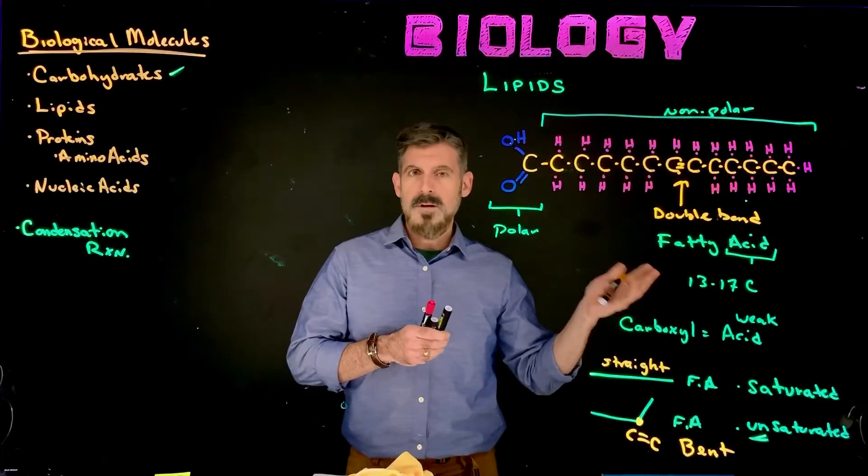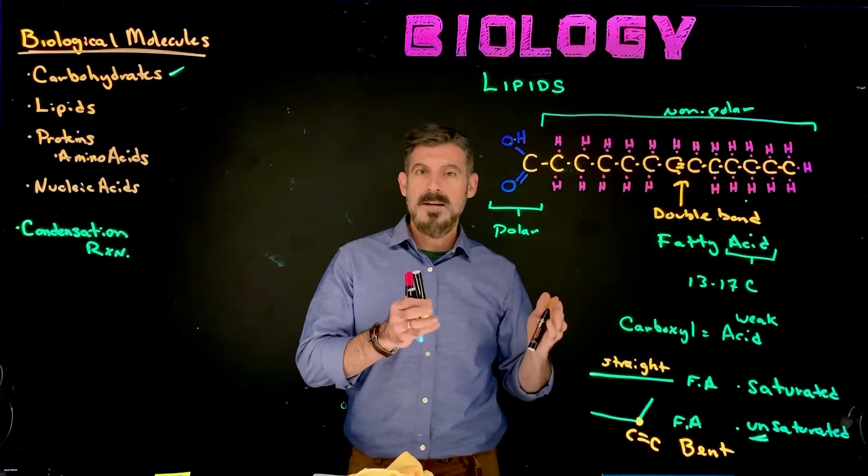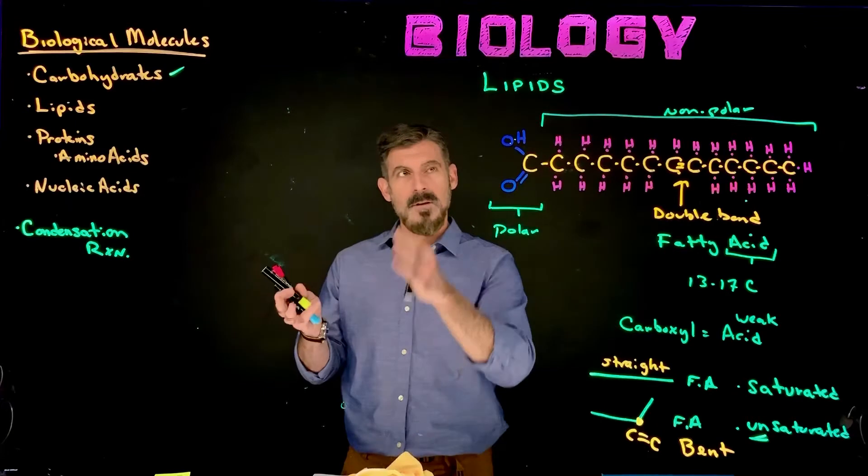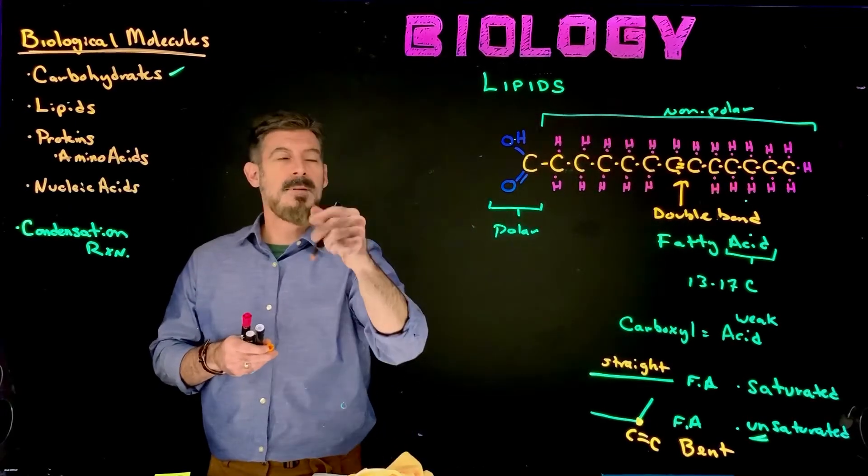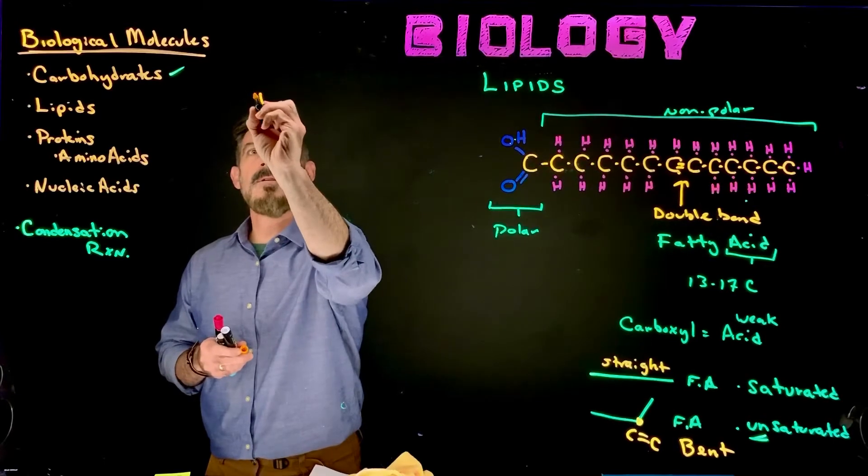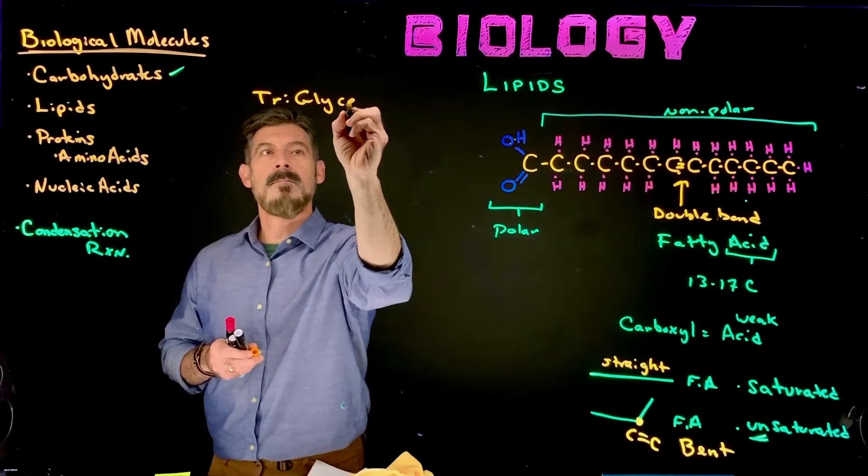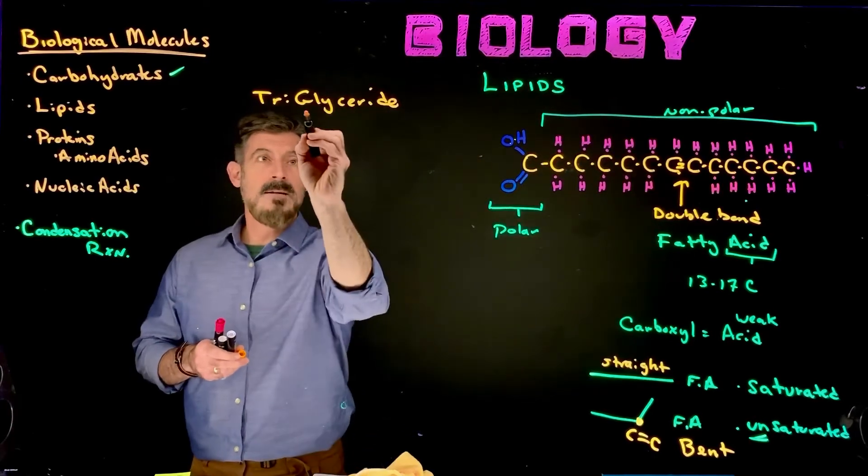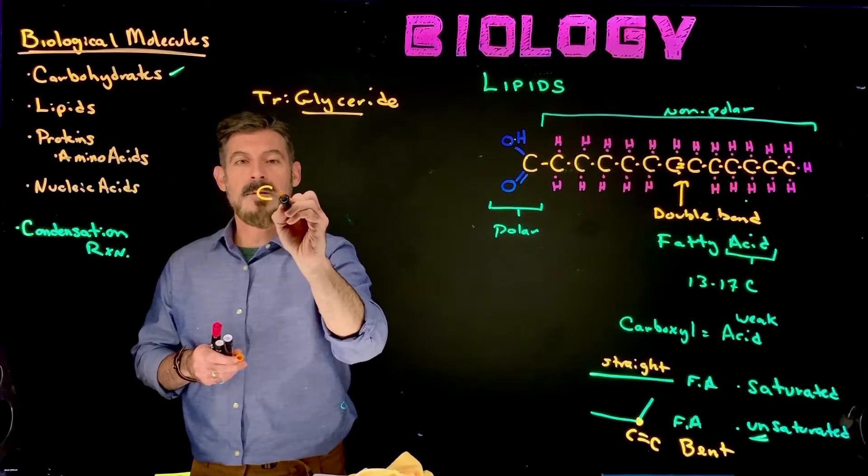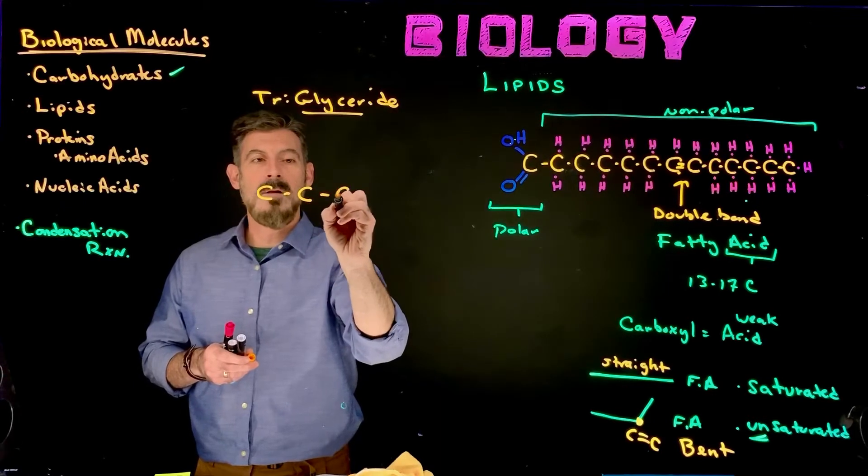So fatty acids can exist on their own as free fatty acids, but usually fatty acids are stored as part of a larger molecule that we call a lipid. And this particular type of lipid that we're going to talk about is called a triglyceride. So the triglyceride, this first part here, starts off with a glycerol molecule.